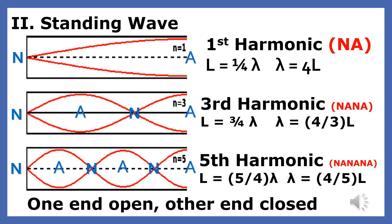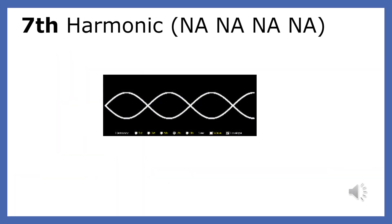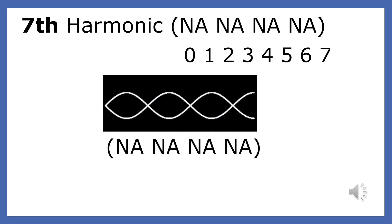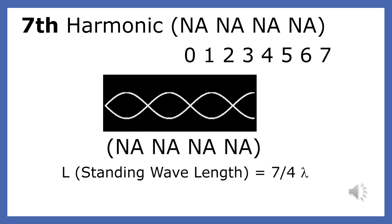With the standing wave that is open at one end, each frequency is an odd number multiple of the fundamental — that is one, three, five, seven, or nine times the fundamental. I am going to pause for a short period of time so you can count the quarter wavelengths. Did you count seven quarter wavelengths? The wavelength in this tube is four-sevenths the length of the standing wave.